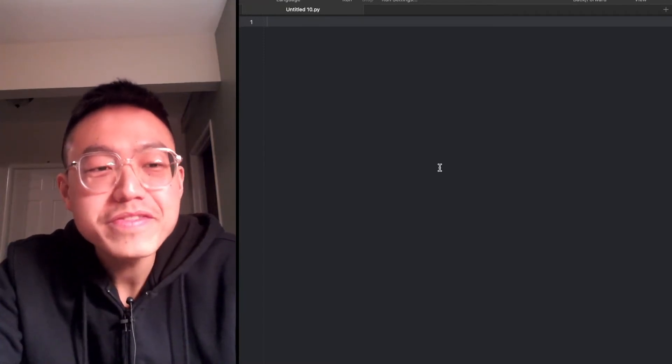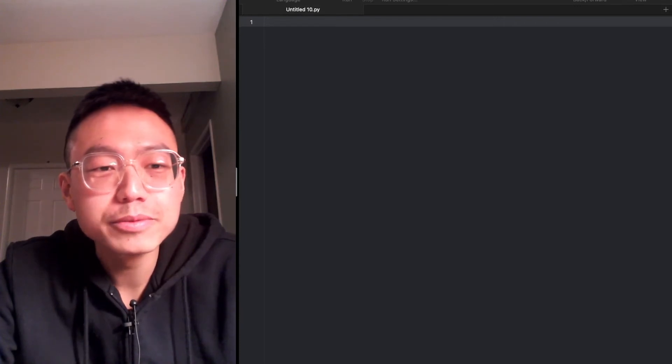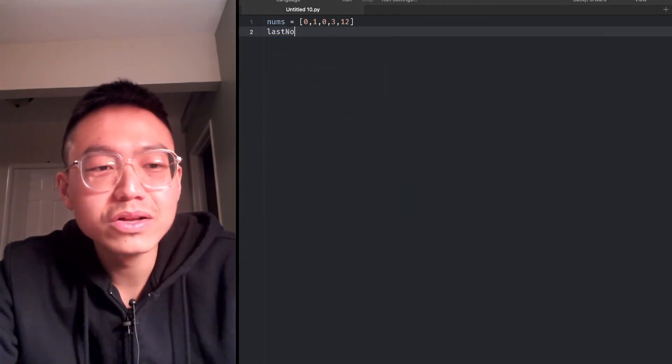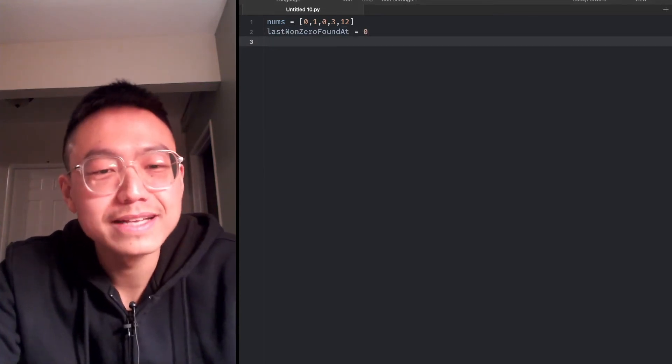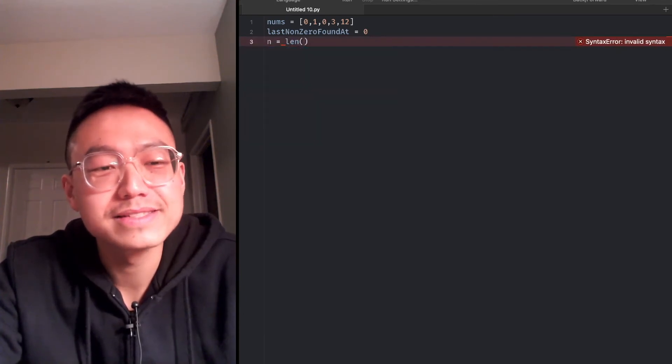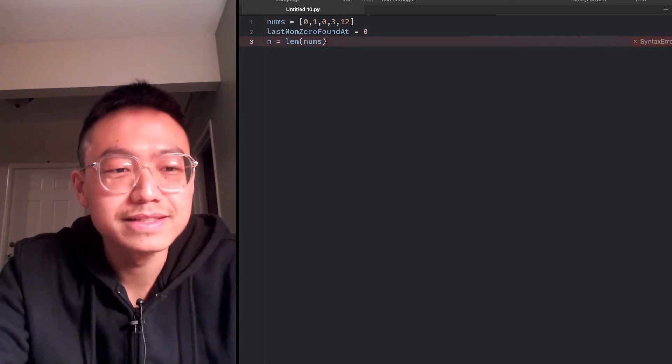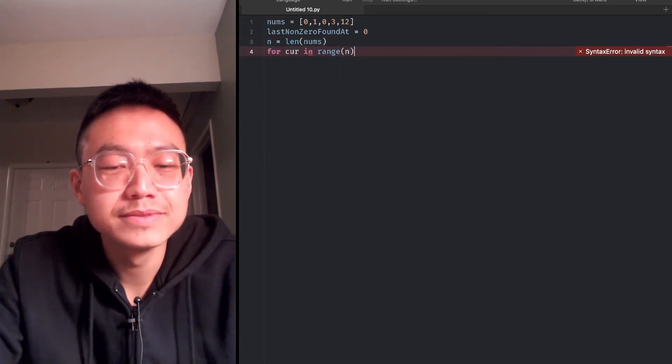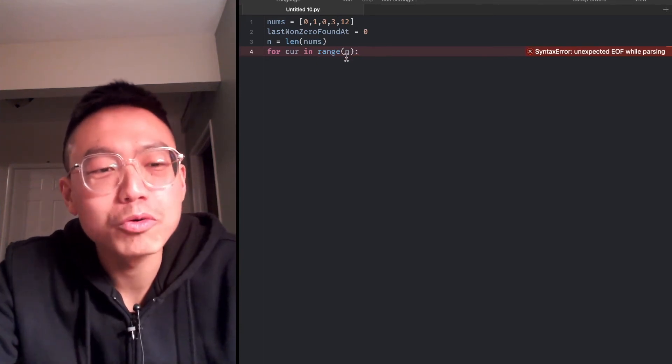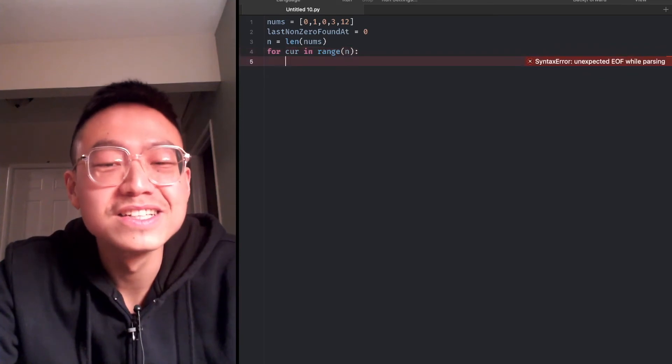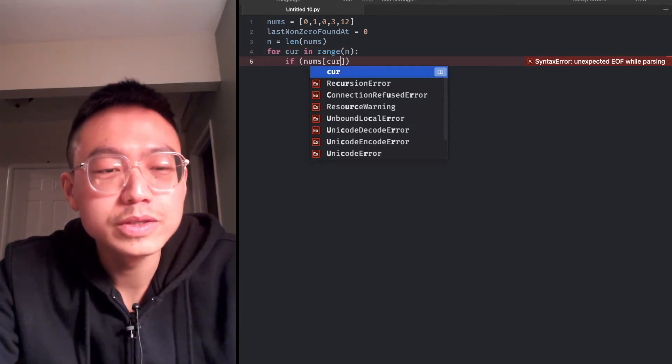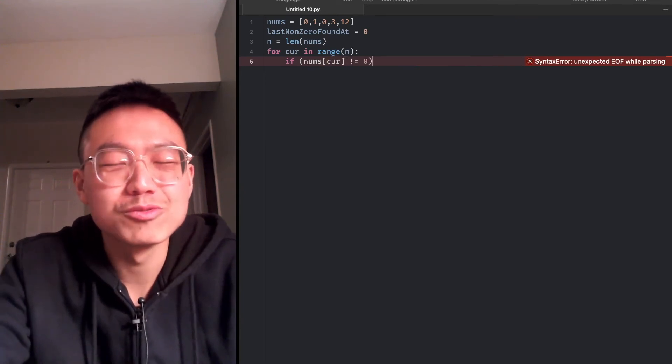Let's implement the code in Python. First, we get the input data to put in here as our test case. The slow pointer, lastNonZeroFoundAt, always keeps track of the last zero. And n is to calculate the complexity, the length of the input array. For current in range n, the current pointer which is the fast pointer will iterate only once in this range. We need to give it an if statement. If nums at the current index is not equal to zero.